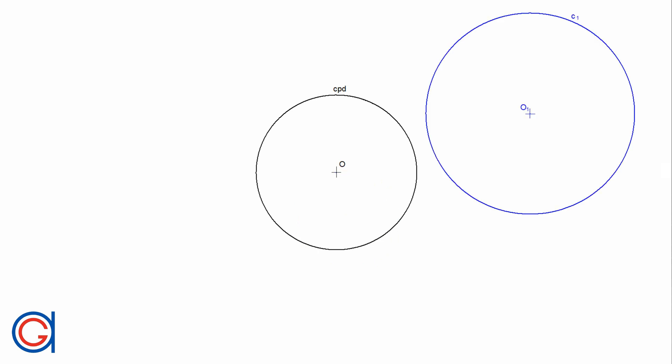So let's start with circumference number one, which is located outside the reference circle. The inverse circle of circumference C1 is another circle, circumference C1 prime, which is going to be located inside the reference circle. The first step is to join the origins O and O1 and elongate it — we will call this line R. This line R intersects with the circumference C1 at two points A and B, highlighted here in red dots.